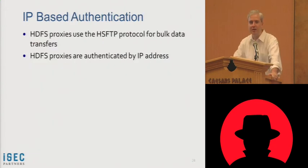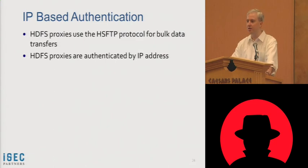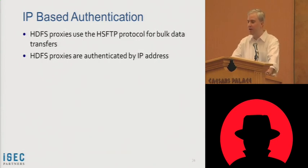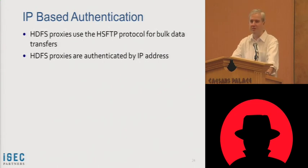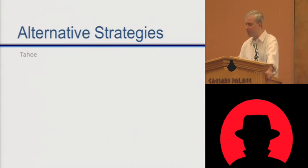Finally, IP-based authentication is in use. In some Hadoop deployments there will be HDFS proxies, which distribute data across a Hadoop cluster — essential for performance. But the Hadoop platform uses the proxy's IP address and a database of roles to perform authentication and authorization. IP address is not a strong means of authentication. So what are some alternative strategies? One we can discuss is Hadoop over the Tahoe-LAFS.